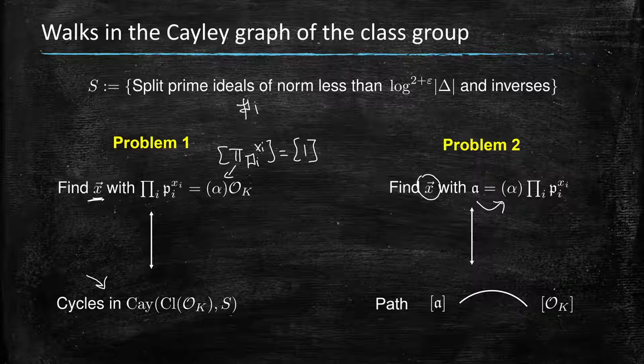The Pis are all of small norm, and their action is easy to compute. It's a very interesting task to break down in the ideal class group an input ideal A of large norm as a product of ideals of small norm. In terms of walks in the class group, this is the finding of a path between the class of that input ideal and the trivial class of the class group, the class of principal ideals. In general, this is the problem of finding a path between two given vertices in the Cayley graph. These are the main computational problems that justify the study of the mixing properties of the Cayley graph of the class group.